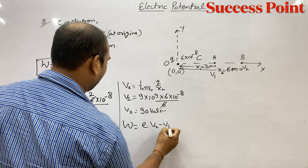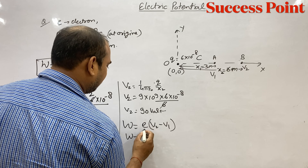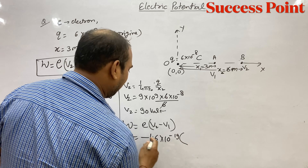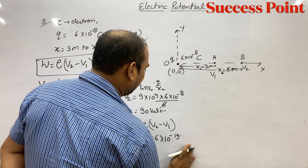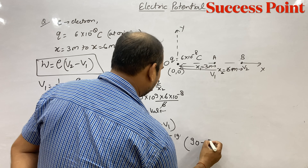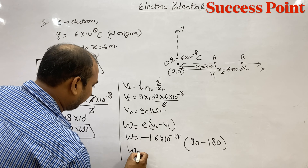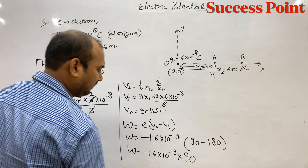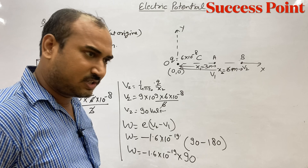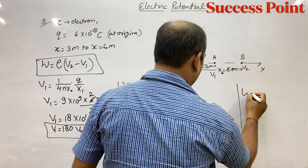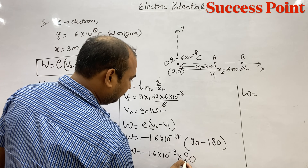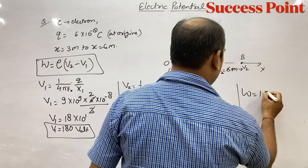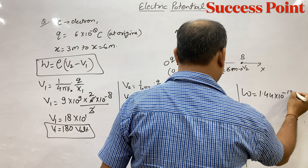Now put E × (V2 - V1). E kya hai? Charge of electron, which is minus 1.6 into 10 to the power minus 19. V2 = 90, V1 = 180. So W = minus 1.6 into 10⁻¹⁹ into (90 minus 180). Multiplying: 1.44. The two negatives make a positive, so W = 1.44 into 10 to the power minus 17 joules.